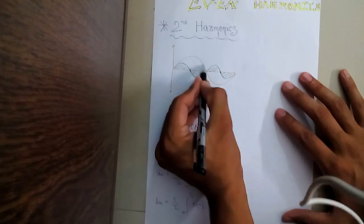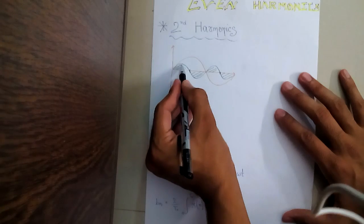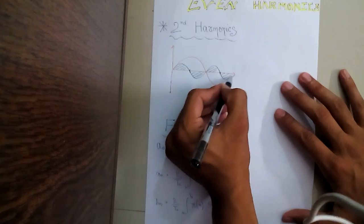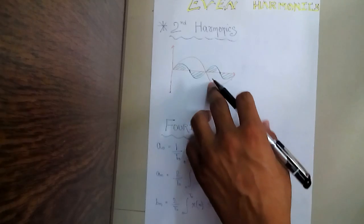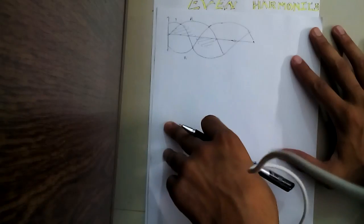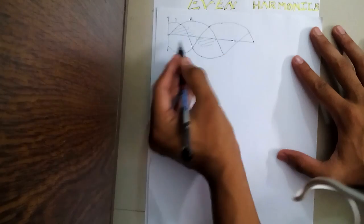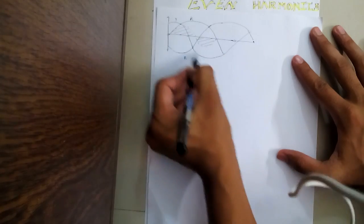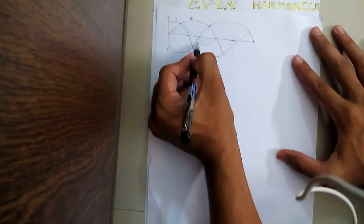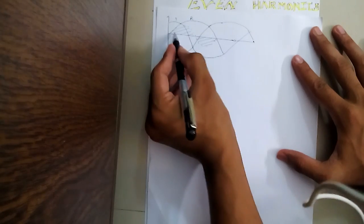Suppose this is my fundamental harmonic, shown by the orange color line. Then this green color shaded part will be called my second harmonics. This is a drawing of a single-phase system, but if you will see what happens in the three-phase system — this is R phase, this is Y phase, this is B phase — then for R phase this shaded part will be my second harmonics.